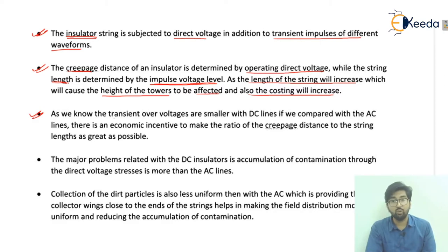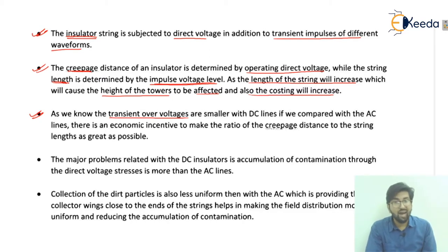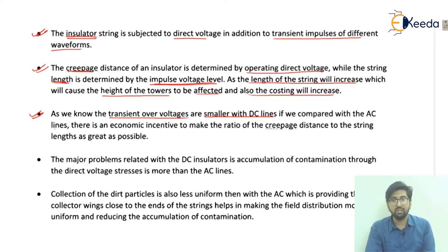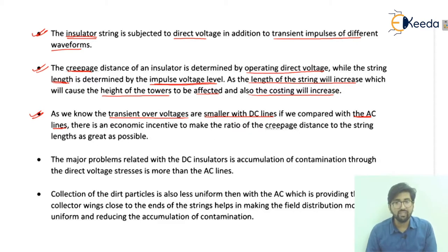Transient overvoltages are of short duration. For DC lines, the transient overvoltage is smaller compared with AC lines — although it is high, when compared with AC lines it is smaller.